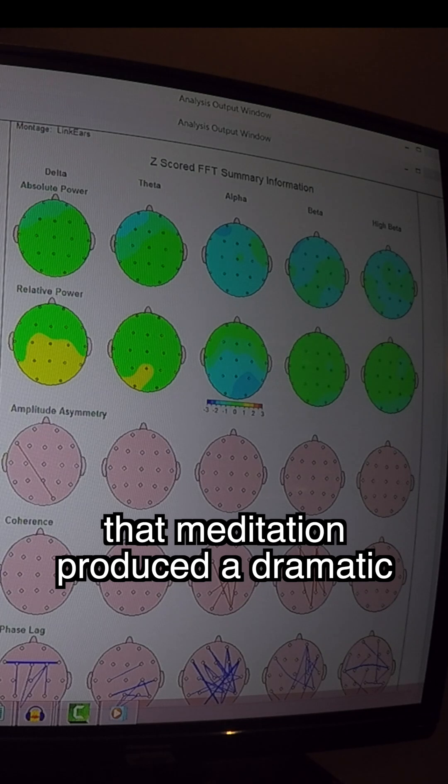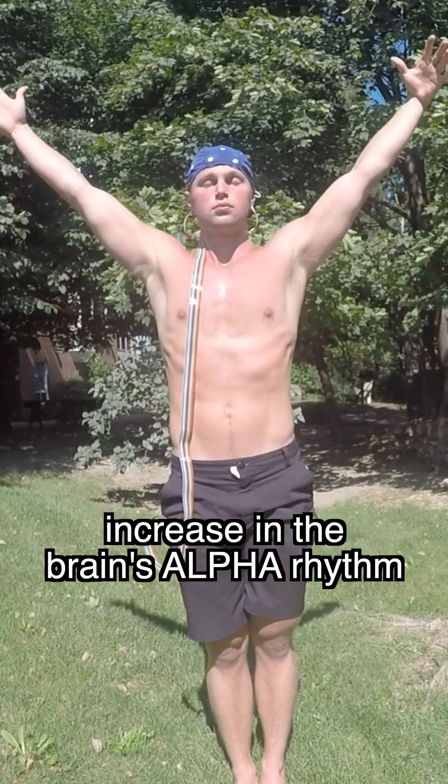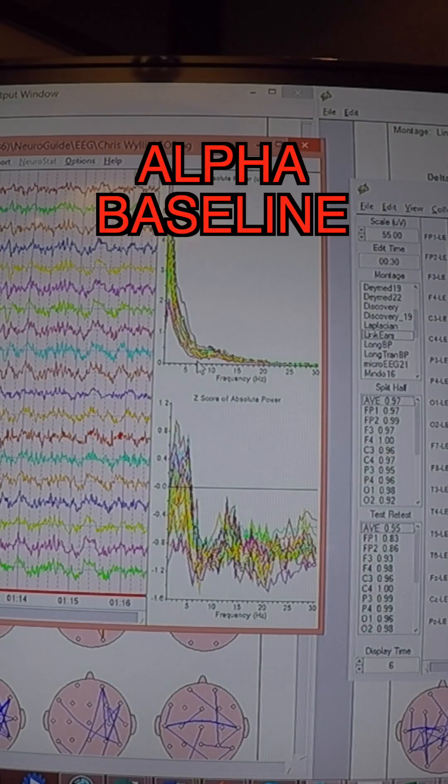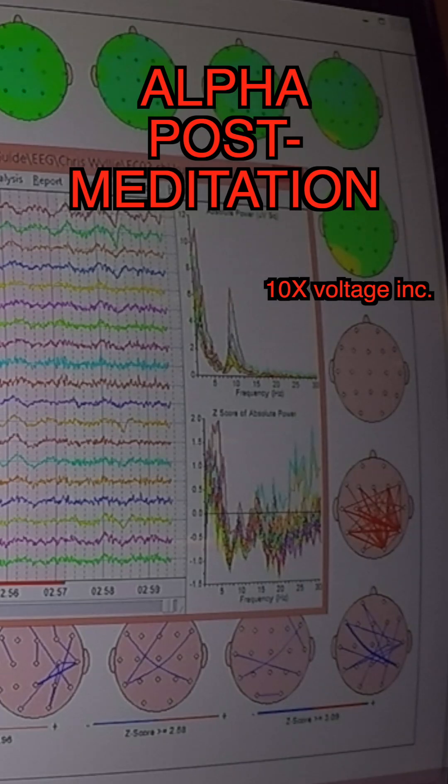What we found was that meditation produced a dramatic increase in the brain's alpha rhythm. In fact, we found as much as a 10x increase in alpha voltage as a result of meditation, both during and afterwards.